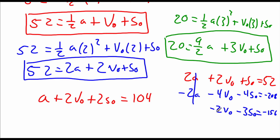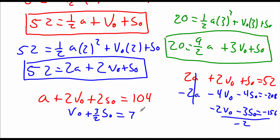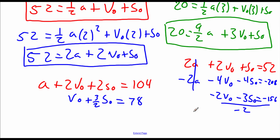We want a one in front of v-sub-0, so I'm going to divide everything by negative 2, giving us v-sub-0 plus three-halves s-sub-0 equals 78. Then we need to work with the third equation. I don't like looking at that fraction on our a, so I'm going to multiply everything by two, giving us 9a plus 6 v-sub-0 plus 2 s-sub-0 equals 40.